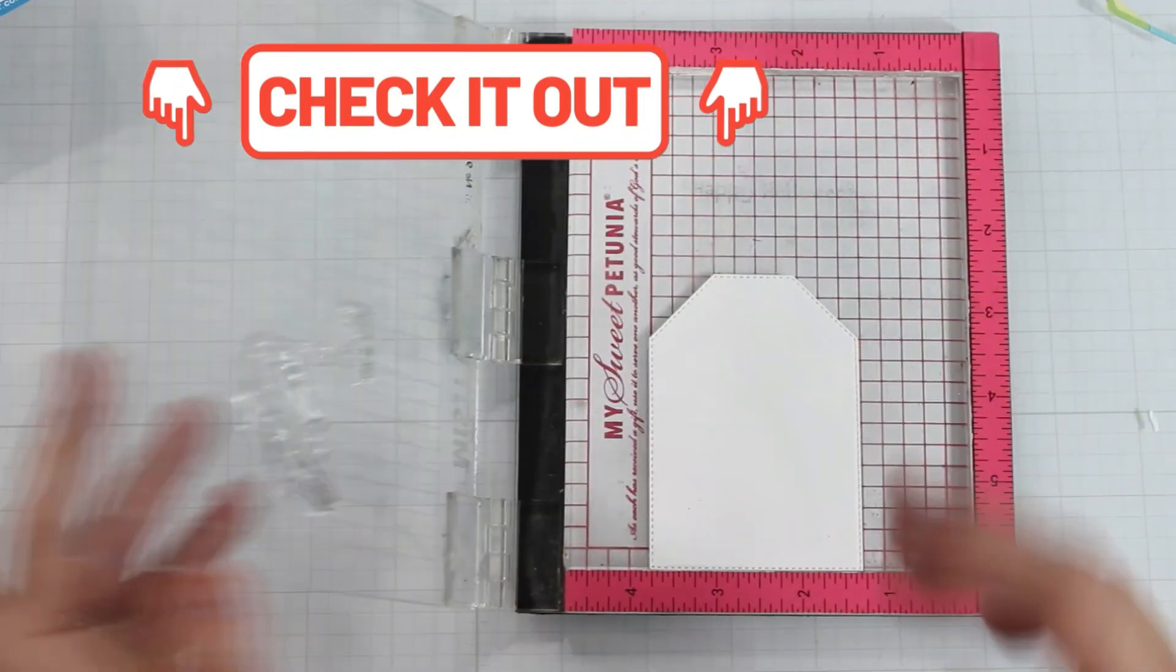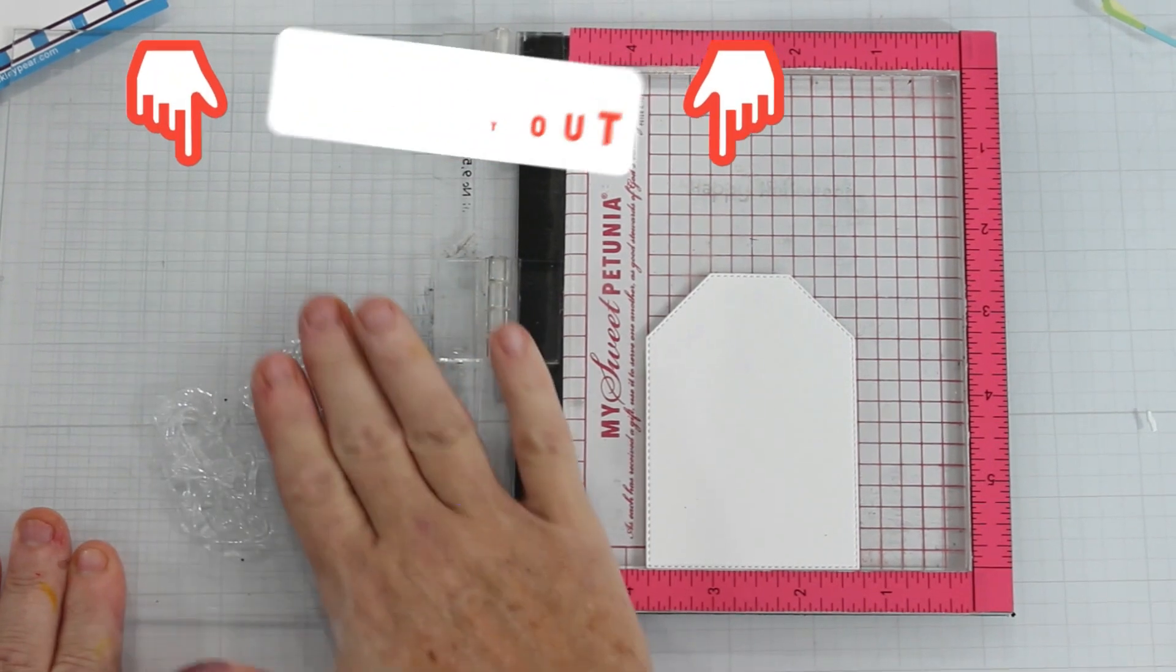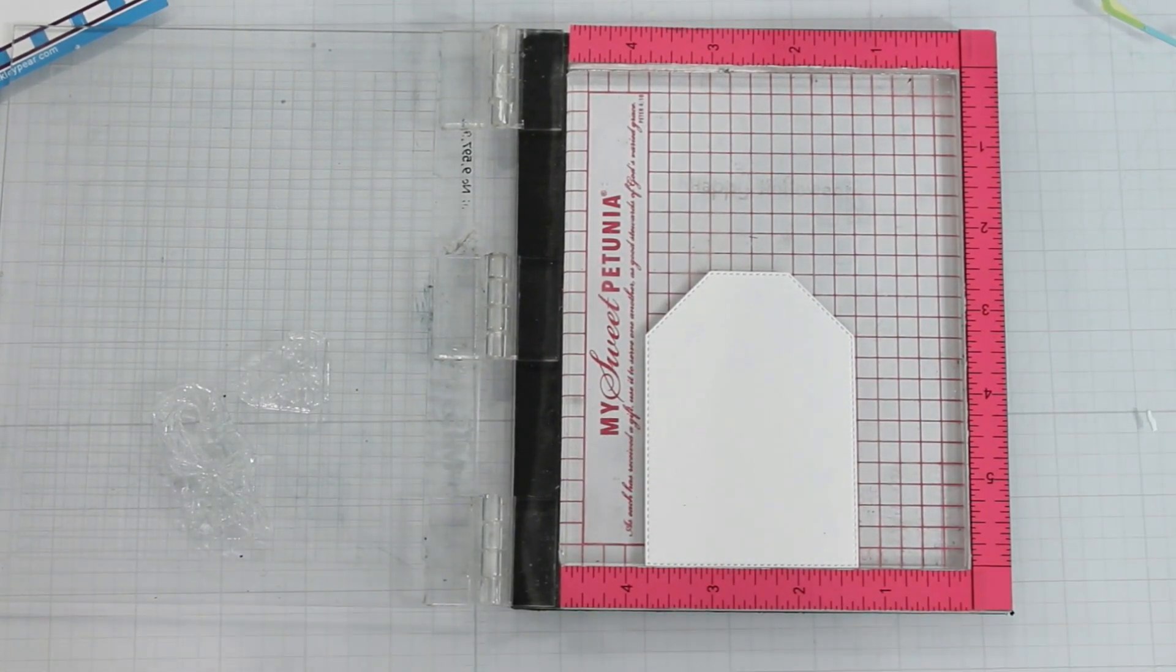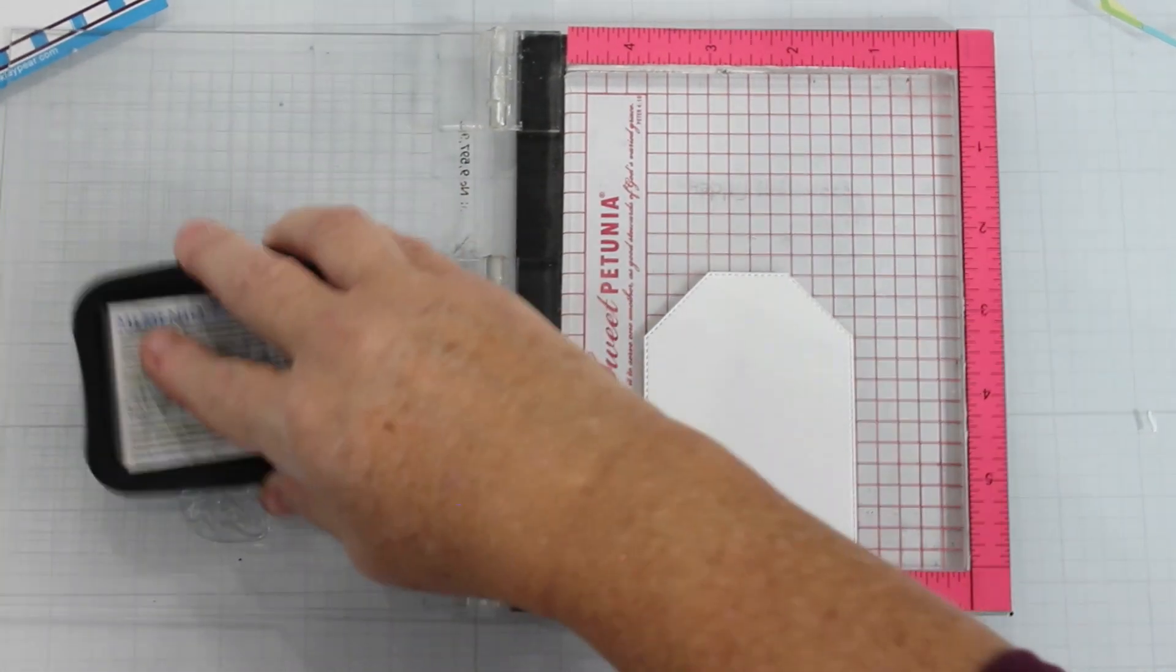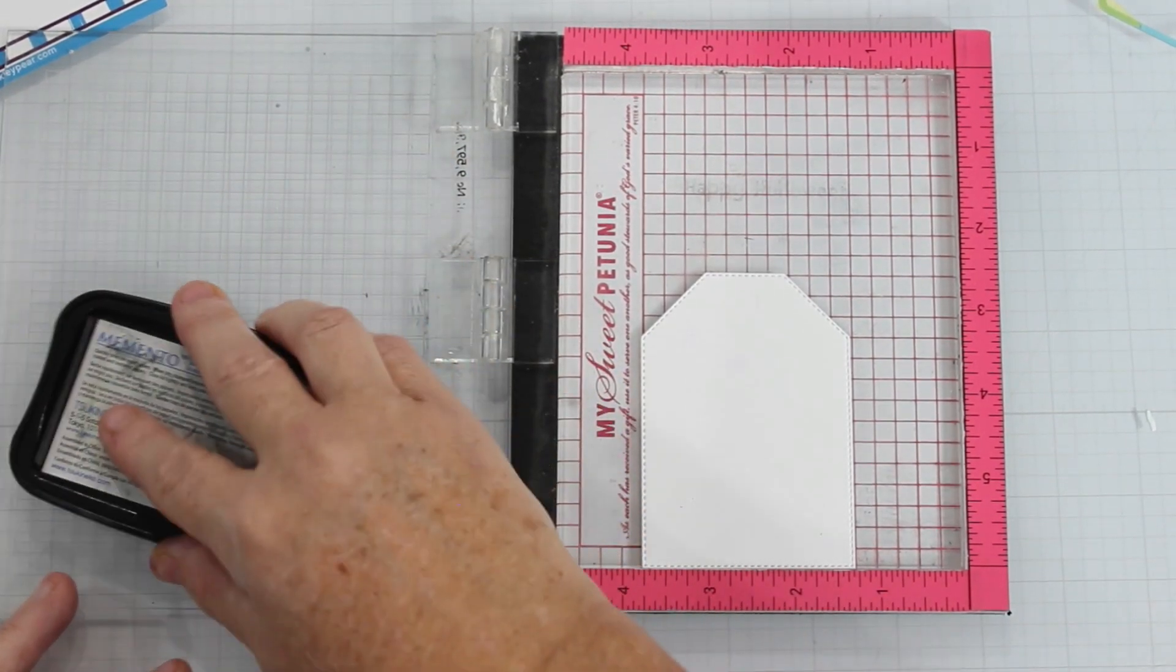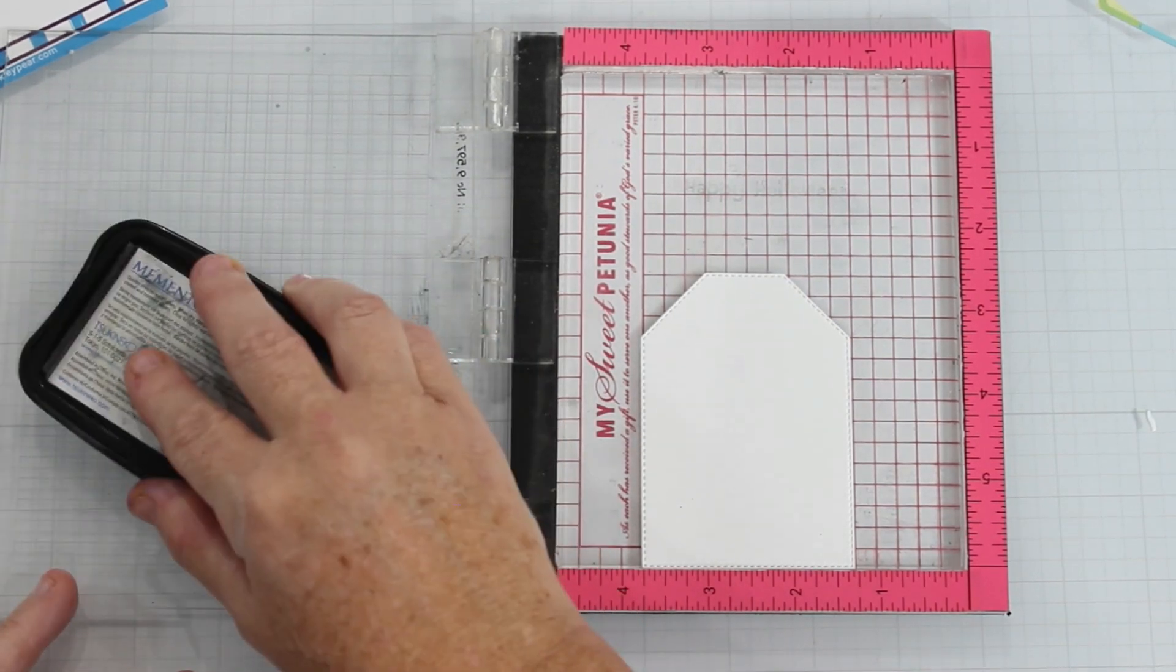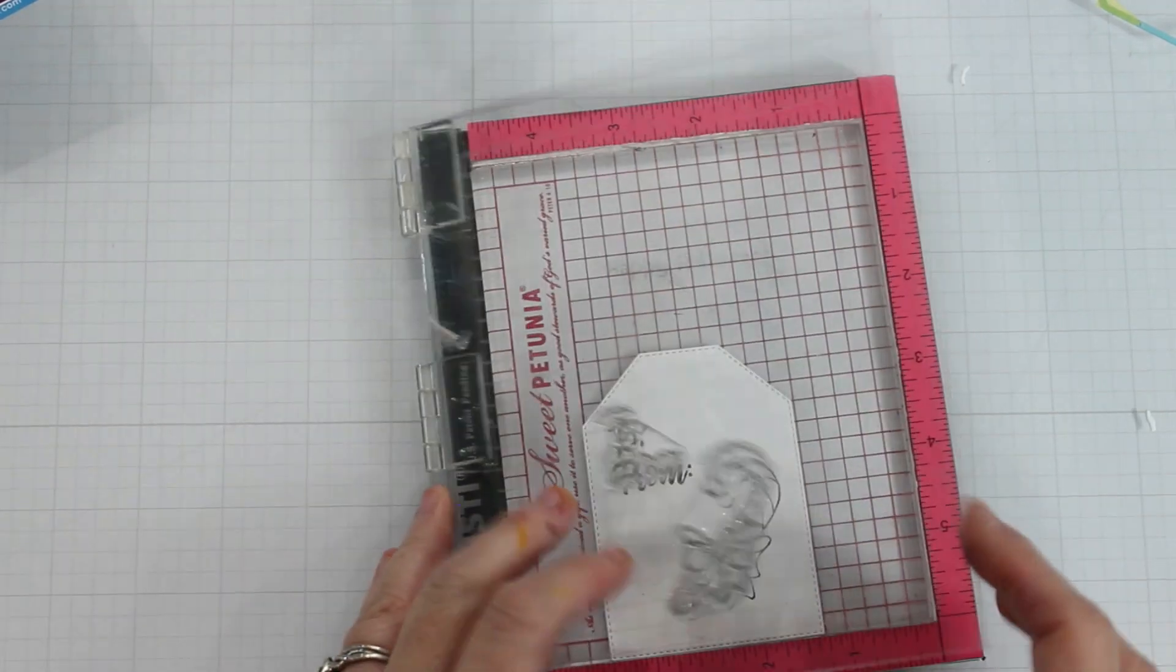So I chose to stamp this onto a tag from my stash. Just to be aware Prickley Pear does have two different nesting tag sets in our shop if you're interested. I am stamping down the to and from and the beautiful candy cane with Memento Tuxedo Black ink and the reason I'm using Tuxedo Black ink is because it's Copic friendly and I will be using my Copics.